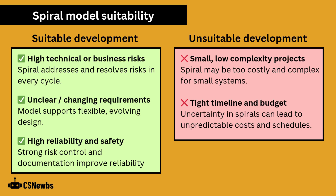The spiral model is suitable for projects with high technical or business risks, as it addresses and resolves risks in every cycle. It's good for unclear or changing requirements because it supports flexible, evolving design, and it's suitable for high reliability and safety because of its strong risk control and documentation.